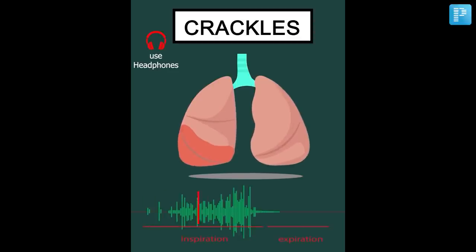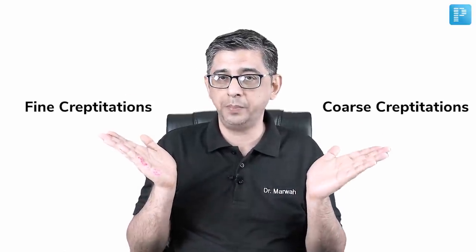Next up are crepitations, also called crackles. To mimic the character of crepitations, raise your hand, touch your hair, and rub your hair between your thumb and index finger — the sound will be identical. They can be of two varieties: fine crepitations or coarse crepitations.